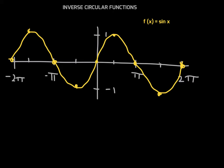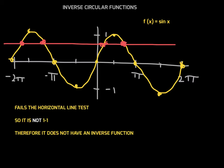The horizontal line test says that if a horizontal line can be drawn through the graph of a function so that it intersects the graph more than once, then the graph is not the graph of a one-to-one function. For example, if I drew a horizontal line like this, it would cross definitely more than once — I'm highlighting the intersection points. So this fails quite miserably the horizontal line test, and because it fails, we know this function is not one-to-one.